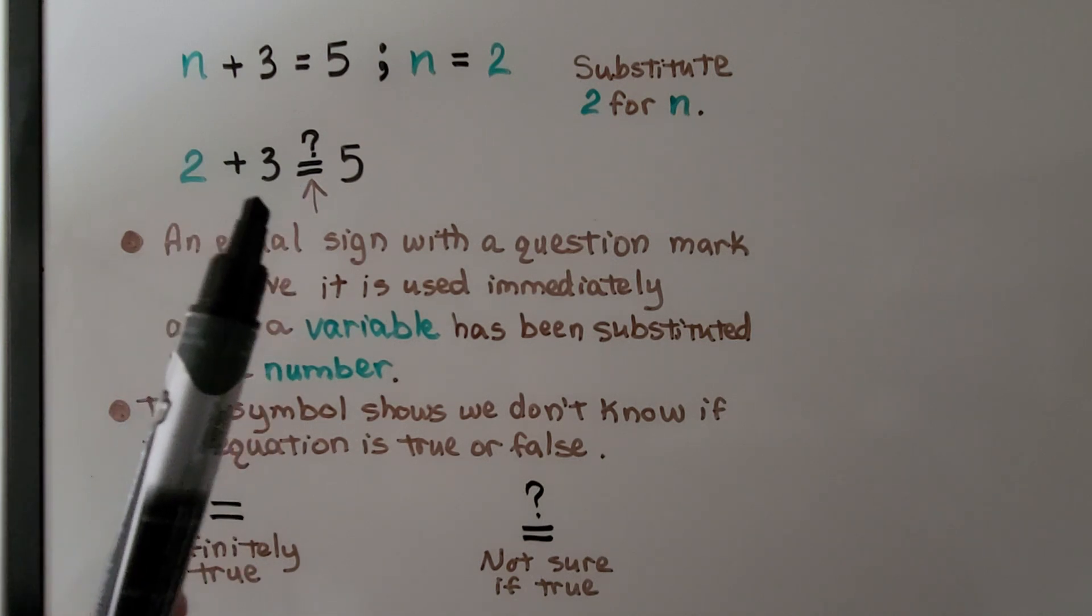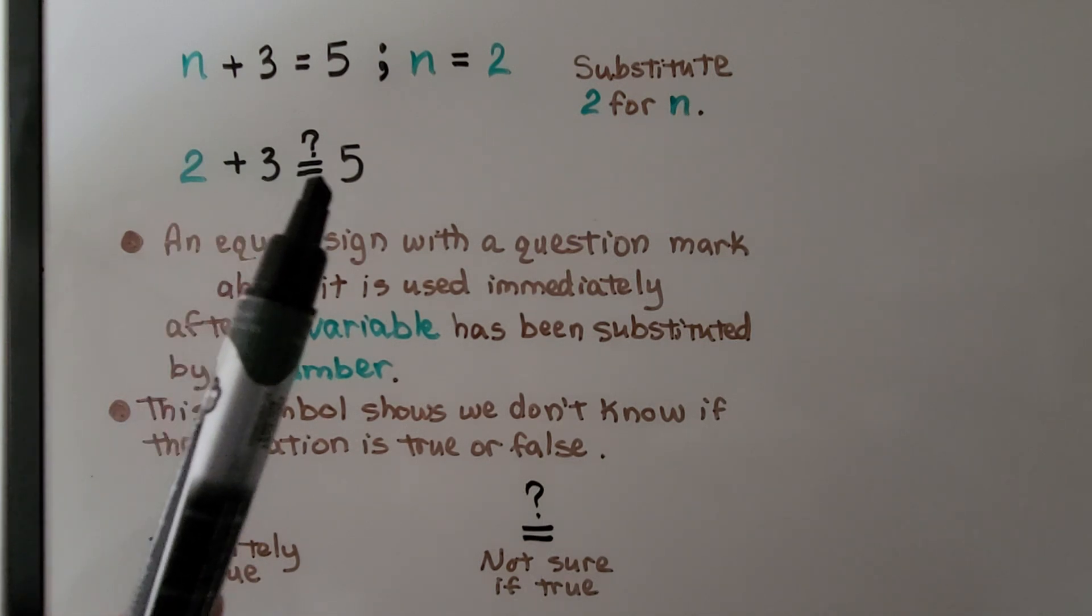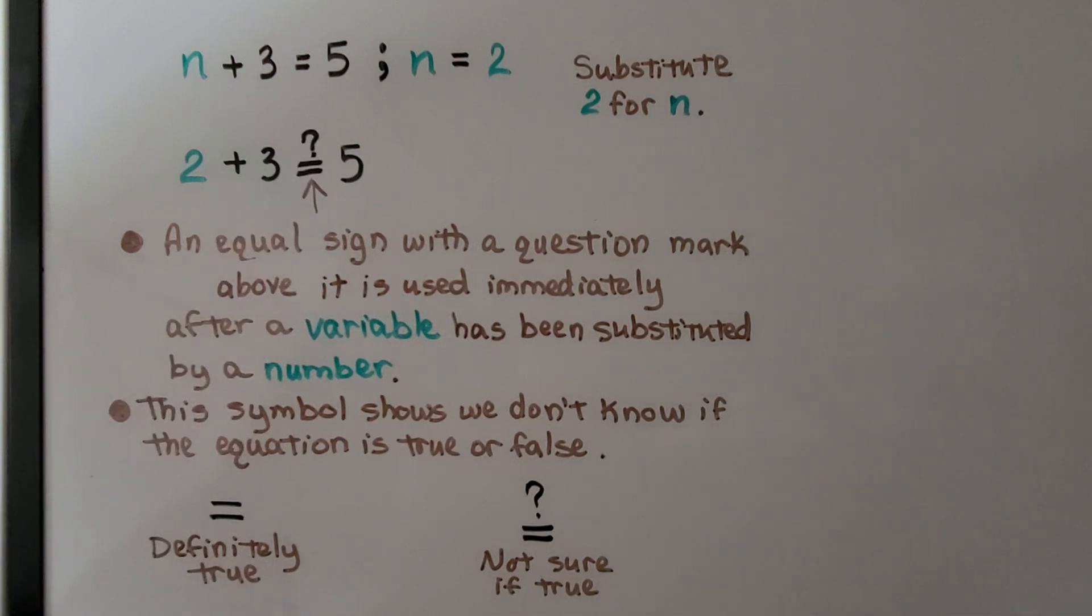if we're not sure if this is true, we can write an equal symbol with a question mark above it. This symbol shows we don't know if the equation is true or false. If it's got an equal sign, we know it's definitely true. If it's got a question mark above it, we're not sure if it's true.